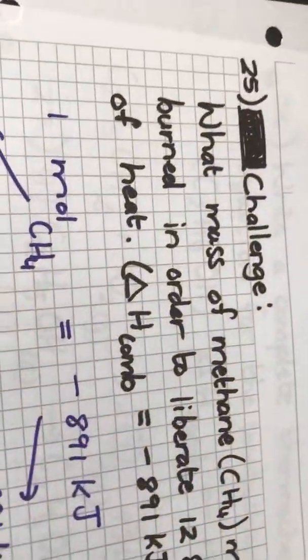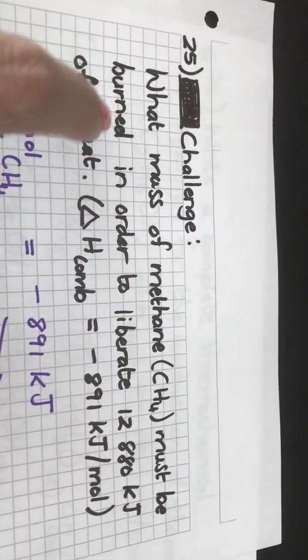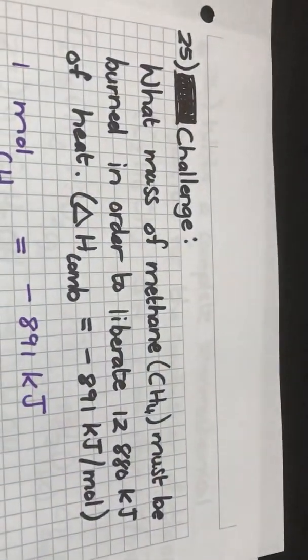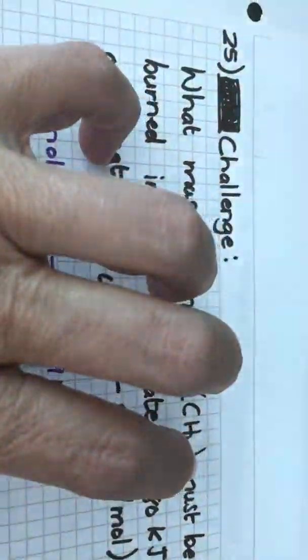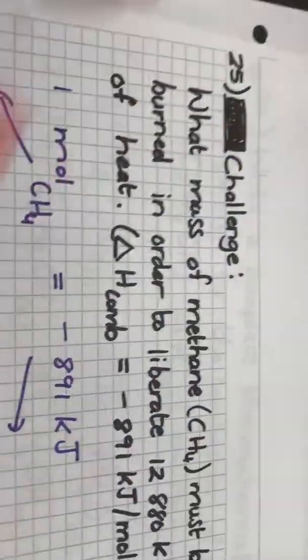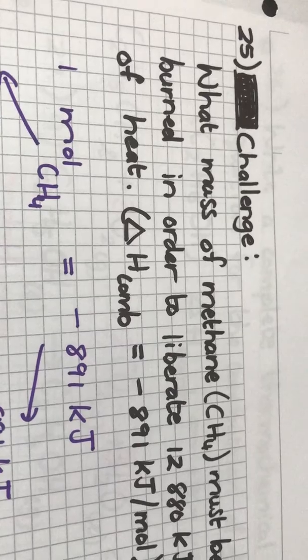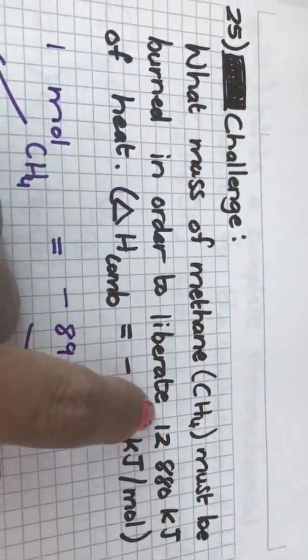Right we can also do this in a bit more of a challenging state where if I ask you what is the mass of methane that I need to burn in order to get 12,880 kilojoules of energy. So in this case methane is again being combusted but instead of telling you how much methane I have and you must calculate how much energy, they are telling you how much energy is being released.